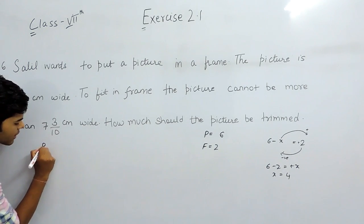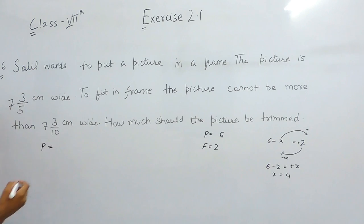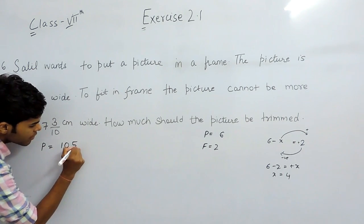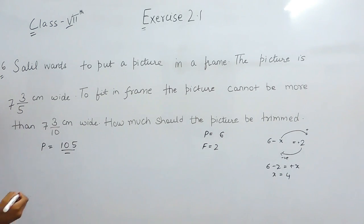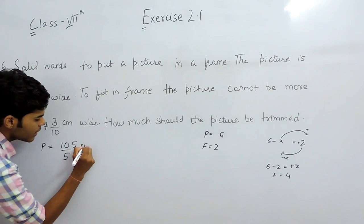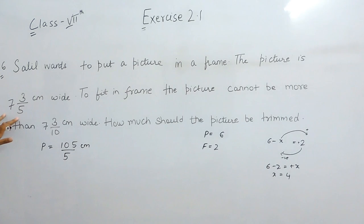The width of the picture is 35 multiplied by 3, 10, 5 upon 5 cm. 73 times 75 and 35, 3 times 3, 3 times 9 and 5, 3 times 15. So 105 upon 5 cm.